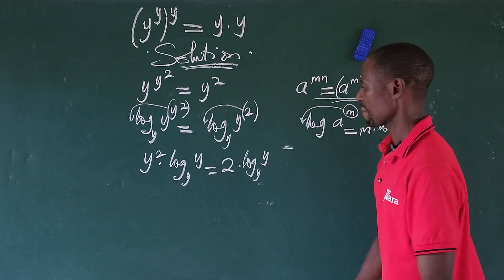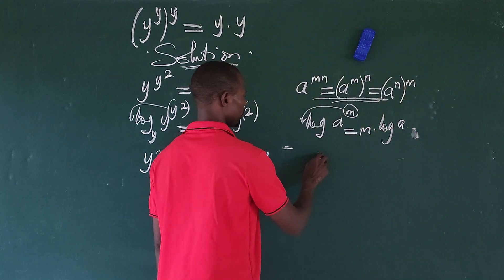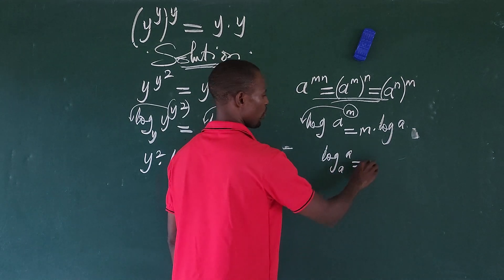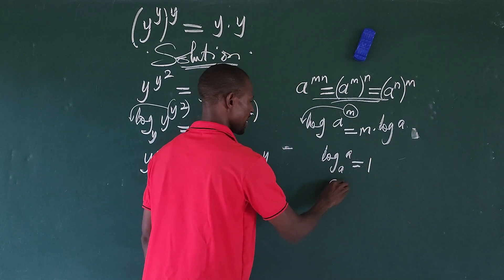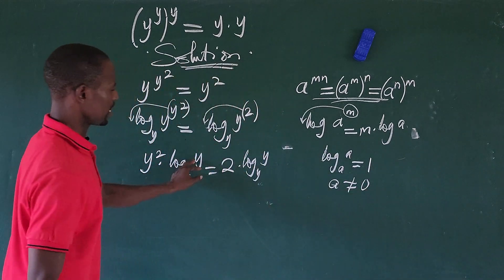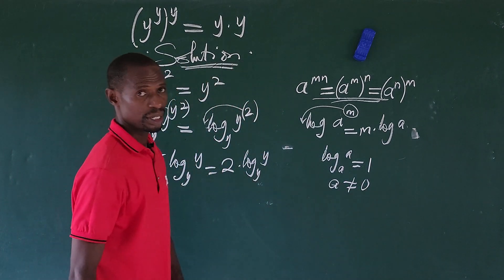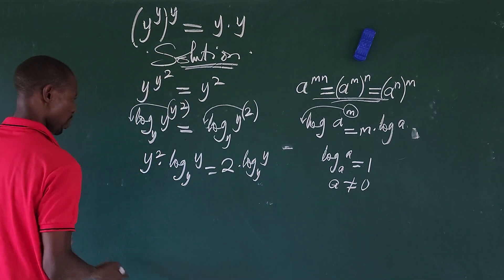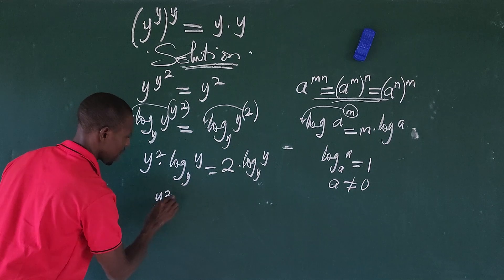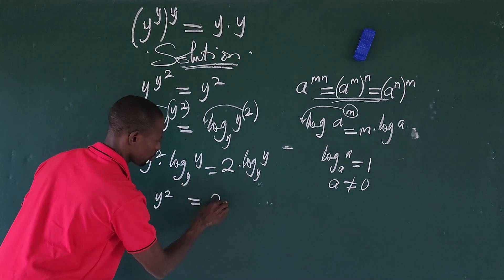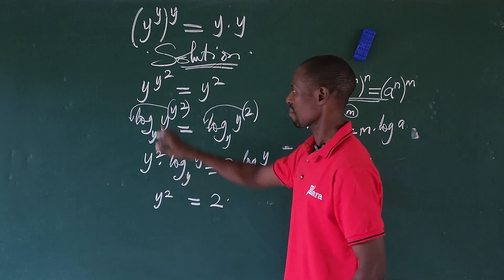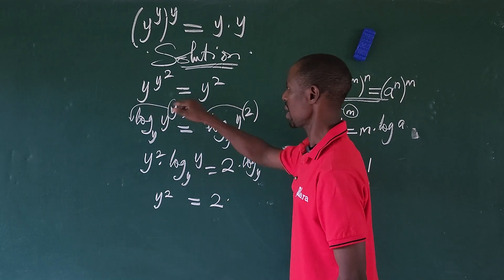Another property of logarithms applies here: log base a of a equals 1, provided a is not equal to zero. What we have here is not zero, so that law holds. The whole of log_y(y) gives us 1. Therefore y squared equals 2.